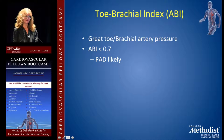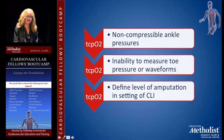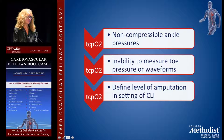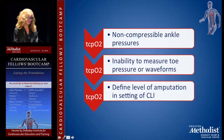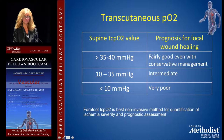These patients are classically those with diabetes or end-stage renal disease. A TBI less than 0.7 is abnormal. Transcutaneous oxygen level or skin perfusion pressure is ordered when we're uncertain at what level a patient would heal an amputation. If they have bad forefoot wounds or are missing toes and ABIs are falsely elevated, we measure skin perfusion pressure at the forefoot, ankle, and mid-calf. A skin perfusion pressure greater than 35-40 gives greater than 90% chance of healing; a TcPO2 less than 10 means they will not heal.